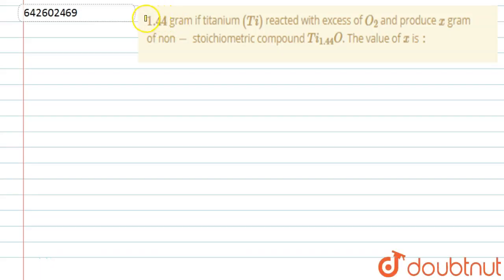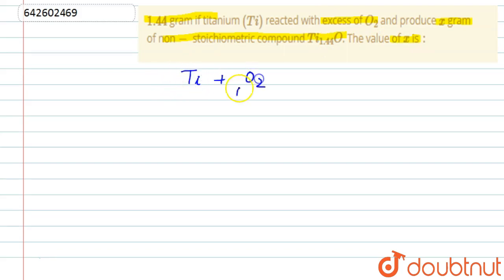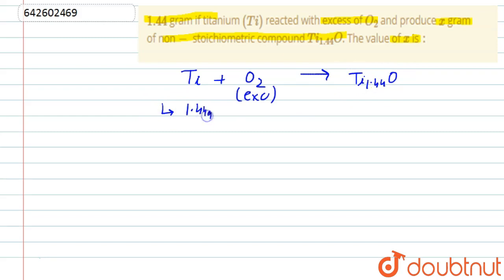In this question, we are given 1.44 grams of titanium reacted with excess O₂ to produce x grams of a non-stoichiometric compound Ti₁.₄₄O. We have to find the value of x. We are given the reaction: Ti + O₂ (excess) → Ti₁.₄₄O, with 1.44 grams of titanium.